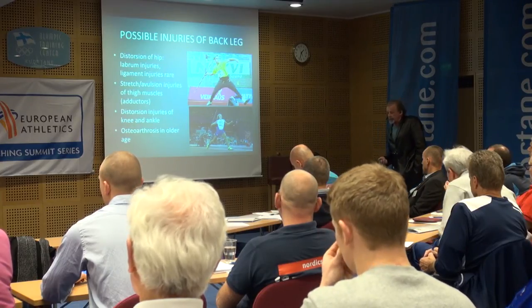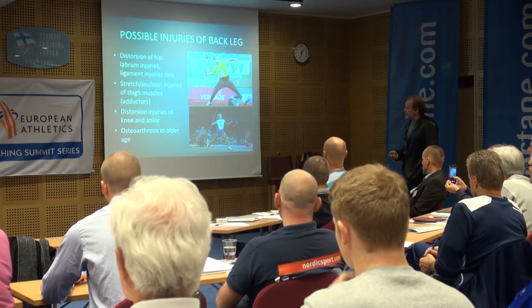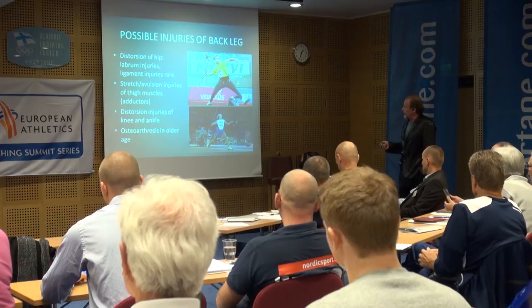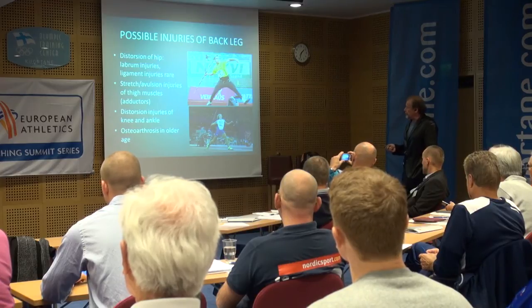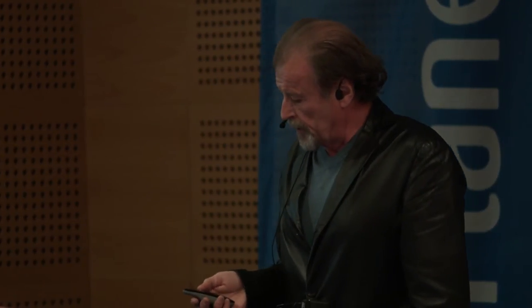The possible injuries of the back leg include distortion, especially hip labrum injuries, and seldom also ligament injuries in the hip joint. Stretch avulsion of the muscles in the thigh is quite common. Distortion of the knee and ankle is also possible. In older age, osteoarthrosis of the joints can be a problem.